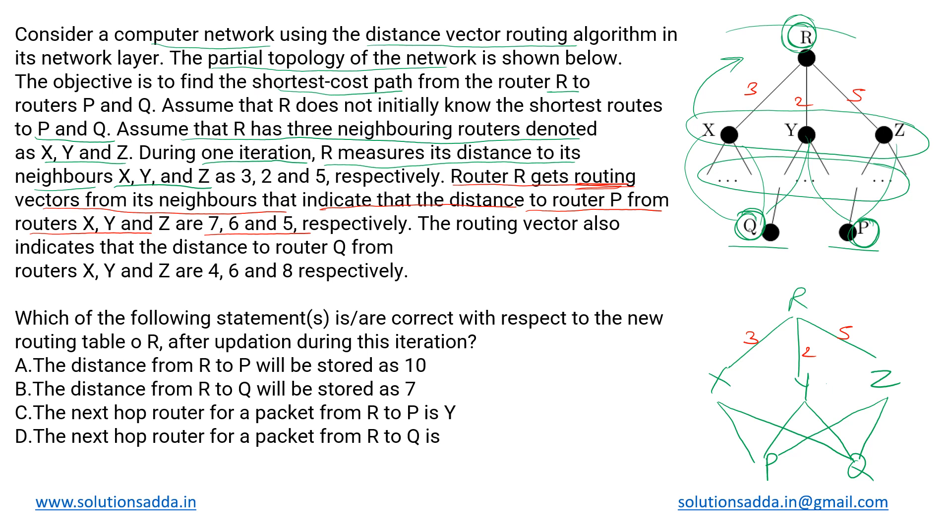For this router P, the distances from X, Y and Z are seven, six and five respectively. Similarly for router Q, the distances from X, Y and Z are four, six and eight respectively.